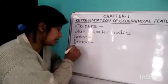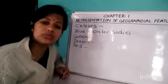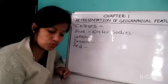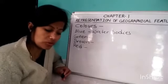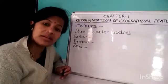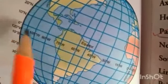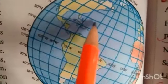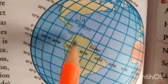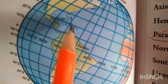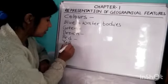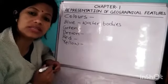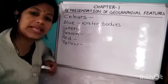Red color is used to show settlements and man-made features like roads and tracks. It is also used to show grid lines and their numbering. Grid lines — the parallels of latitudes and lines of longitudes — form a network on a globe, which is called a grid. Yellow color is used to show agricultural fields and cultivable lands.